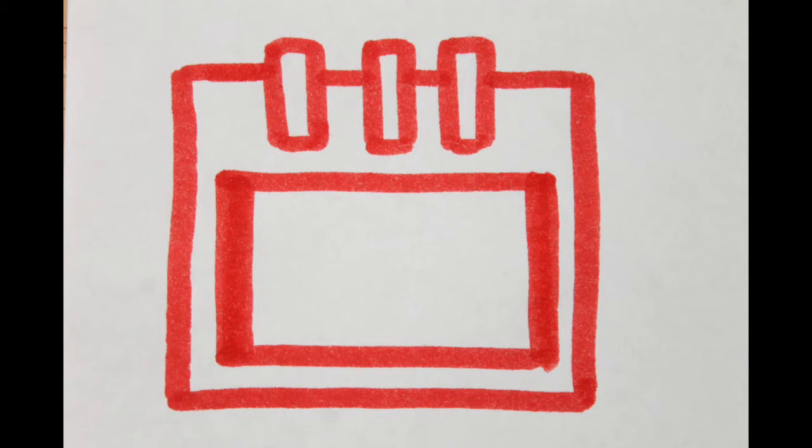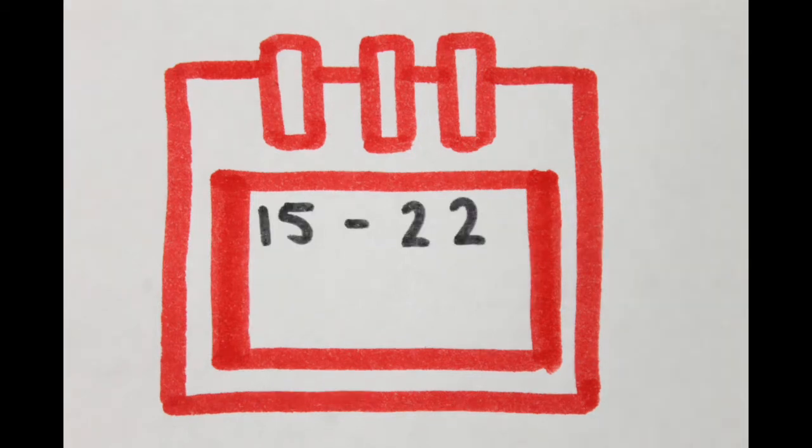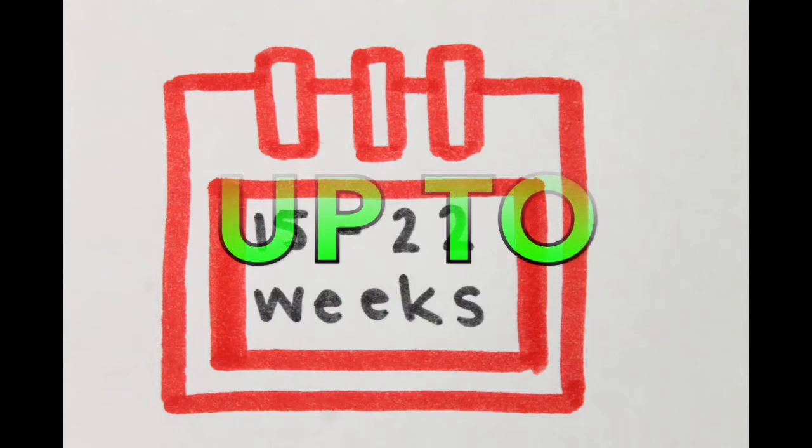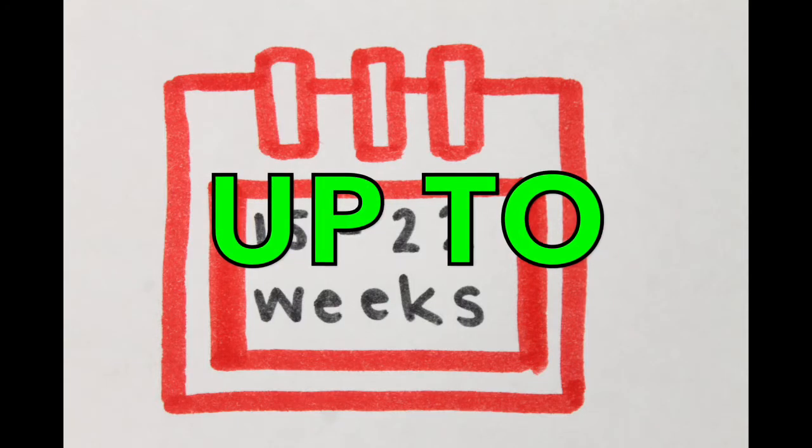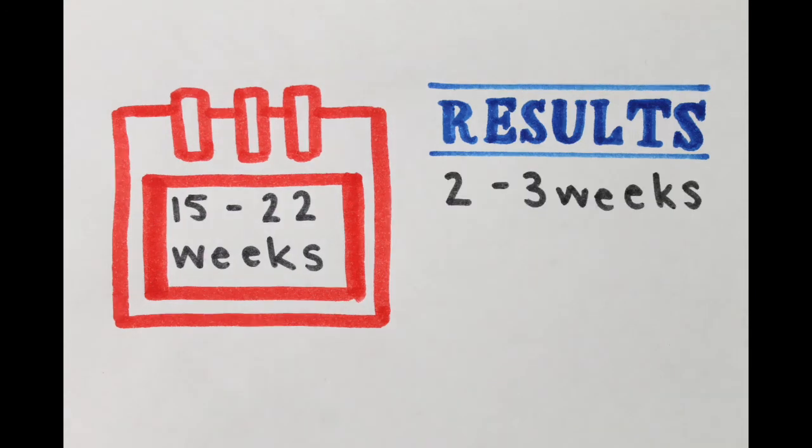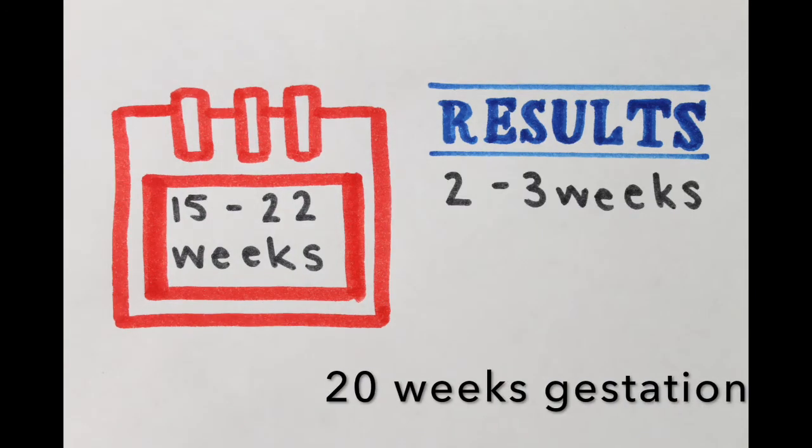Amniocentesis is a process done from 15 weeks up to 22 weeks in Ontario. The key word here is up to. Many clinics will actually offer this procedure between 15 to 17 weeks gestation. The results take 2 to 3 weeks. Many people will have their results by 20 weeks gestation.